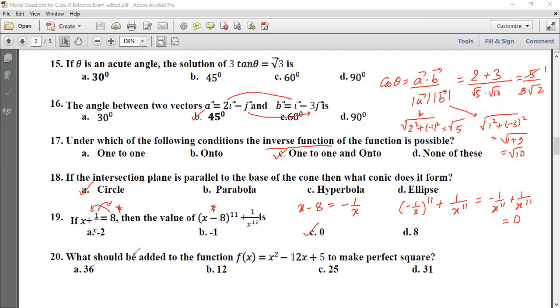Problem 20: What should be added to the function f(x) equals x square minus 12x plus 5 to make a perfect square? To complete the square, we need x plus 6 to the power 2, which is x square minus 2 into x into 6. So we need to add 31. Thank you.